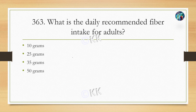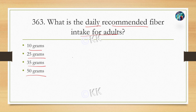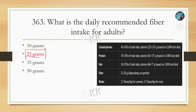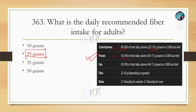What is the daily recommended fiber intake for adults? Option A: 10 grams. Option B: 25 grams. Option C: 35 grams. Option D: 50 grams. The correct option is B — 25 grams. For reference: carbohydrates are 45 to 65 percent of total daily calorie intake, about 225 to 325 grams based on a 2000-calorie diet. Protein is 10 to 35 percent, about 50 to 175 grams. Fiber is 25 to 38 grams. Water intake is 2.7 liters per day for women and 3.7 liters per day for men.